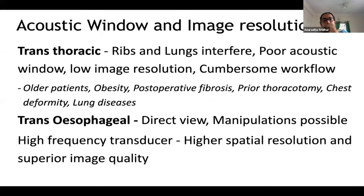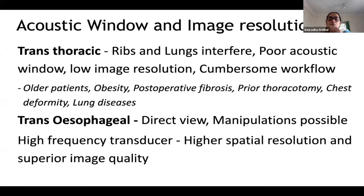Regarding acoustic window and image resolution, trans esophageal echo has a better acoustic window and superior image resolution because it provides a direct view of the heart from the esophagus. Manipulation of the probe — flexing, retroflexing, and translating — is possible, and high-frequency transducers can be used, giving higher spatial resolution both axially and laterally. In contrast, with trans thoracic echo, ribs and lungs usually interfere, especially in older patients, obese patients, post-operative patients, those with chest deformity, and those with lung disease.